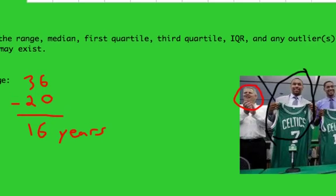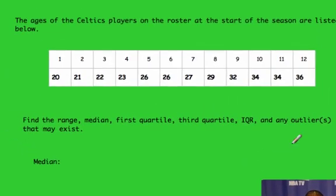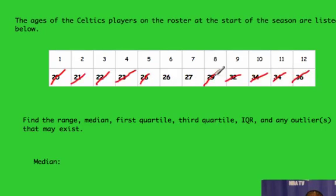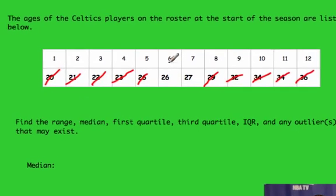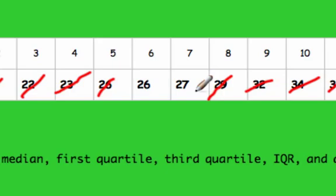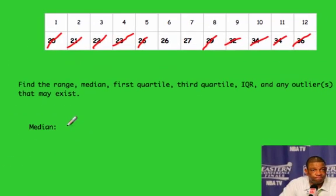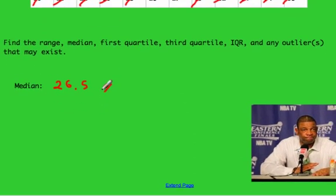Next we need to find the median. We cross out values from the lowest and highest ends until we reach the center. After crossing off five on each side, we're left with two numbers in the middle — the sixth and seventh data values — which are 26 and 27 years old. So the median age is right between 26 and 27, giving us a median of 26.5 years of age.